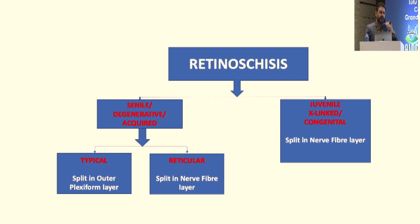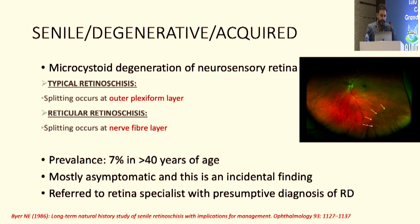Because the split is in the inner layer, it tends to be more bullous. It's not as rare as one might think. There is hardly any data from pigmented races, and most of this data comes from landmark work done in the mid-1980s.